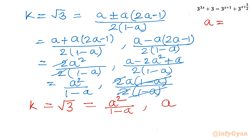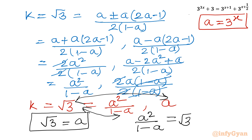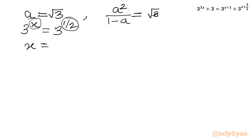Remember, a was our substitution: a = 3^x. Considering the two equations: first, √3 = a means 3^x = 3^(1/2), and since the bases are the same, the exponents must be equal. So x = 1/2 is our first real solution. We will verify this at the end.